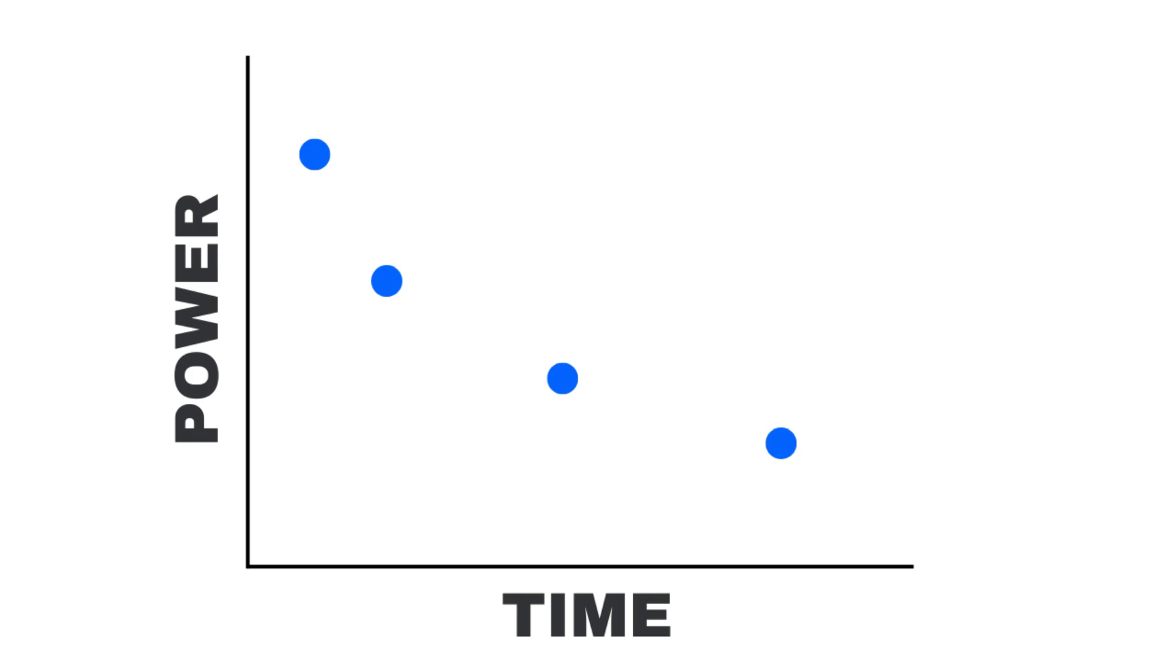So you can see from the short periods of time you can go way harder than you can for the long periods of time. So what we can do is draw a line through all of them. Now, the interesting thing here is when you draw the line, it looks like it levels out somewhere. But the important thing is that that's critical power or threshold power.